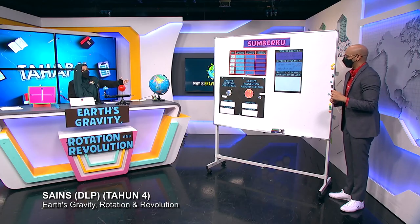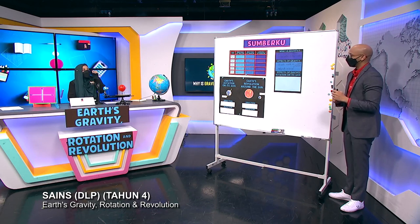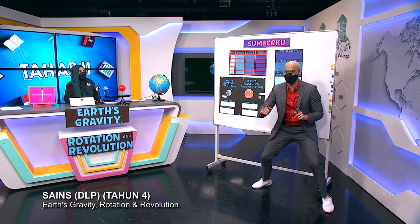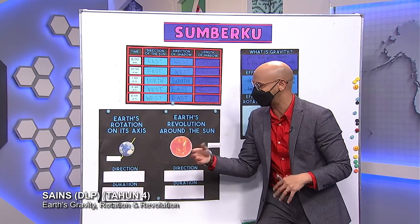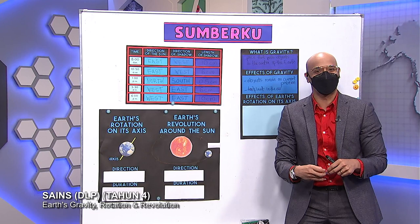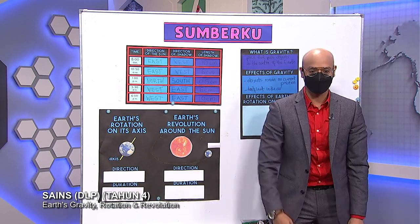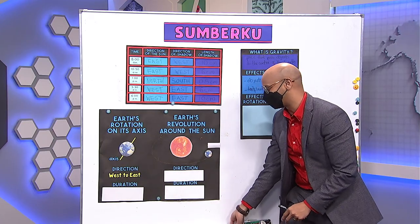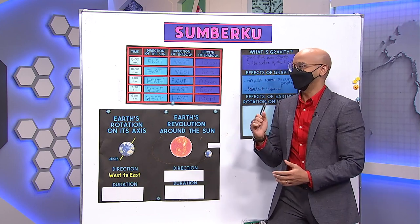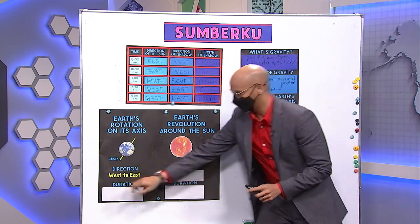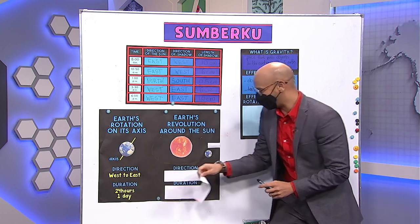Now Earth's rotation on its axis. What is that imaginary line? When you saw me spinning, I rotated on my axis. The direction of rotation is from west to east. And the duration — one full rotation takes one day, or 24 hours. Correct!